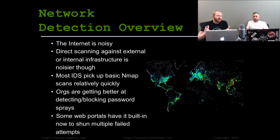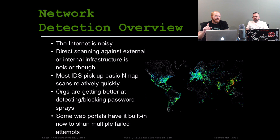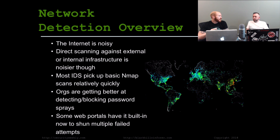First off, the internet's noisy. You probably know that. If you have an external firewall at all, you probably see random things hitting it all day long — there's just a lot of scanning going on. You have a ton of people who are just looking for random vulnerabilities all the time. But that being said, it's still not that hard to detect pretty basic scanning activity. Most attackers will default to using tools like Nmap, and a basic Nmap scan is something that will get picked up by pretty much every single IPS and IDS out there today — they have rules already built in to detect and fingerprint that specific tool.